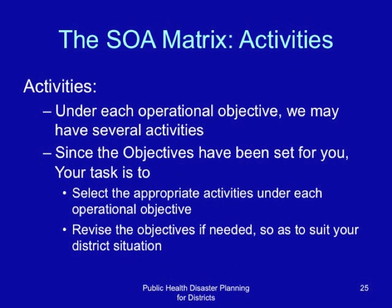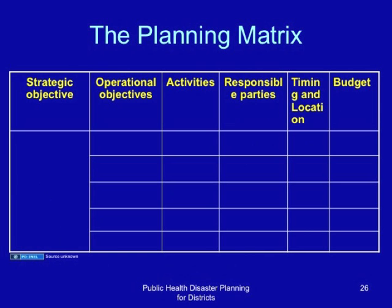This is the planning matrix that you will use in planning for disasters for your district or agency. It shows strategic objectives, operational objectives, activities, responsible parties, timing and location, and an estimate of the budget. Being operational plans, they provide this level of detail so that we can know who will exactly do what in a disaster situation.